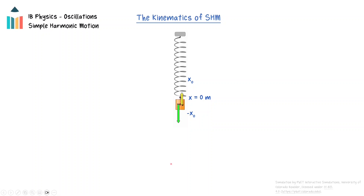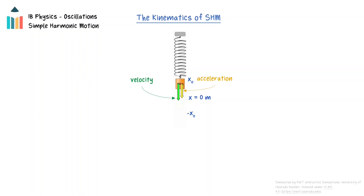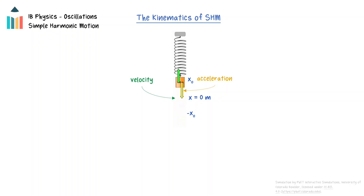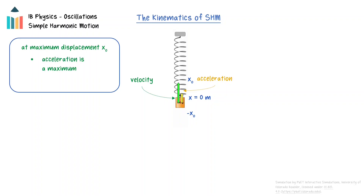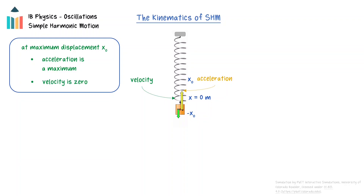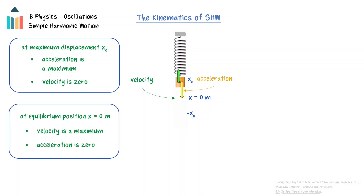The motion of a mass undergoing simple harmonic motion can be described qualitatively by considering the velocity and acceleration at the maximum displacement in the positive and negative directions and at the equilibrium position. At the maximum displacement, the acceleration is at a maximum magnitude and the velocity will be zero. At the equilibrium point, the velocity will be a maximum and the acceleration will be zero. The acceleration will point towards the equilibrium position, so when the mass has a positive displacement, the acceleration will be negative, and when the mass has a negative displacement, it will be positive.